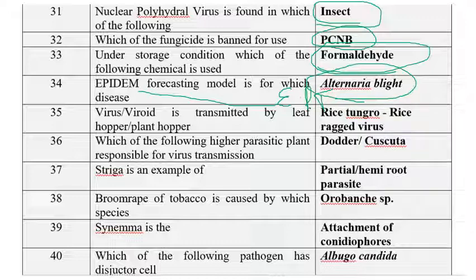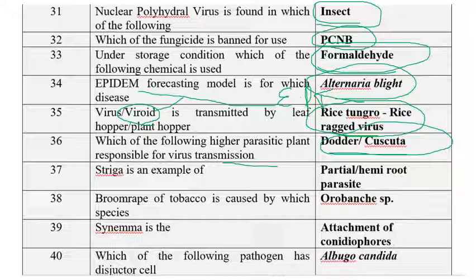Viroids are not transmitted by insect vectors because viroids use mechanical transmission only — all viroids are mechanically transmitted. The virus transmitted by leafhopper or planthopper among the given options is rice ragged stunt or rice tungro virus. Which higher parasitic plant is responsible for virus transmission? That is dodder or Cuscuta. Striga is an example of a partial root parasite or hemi-root parasite.